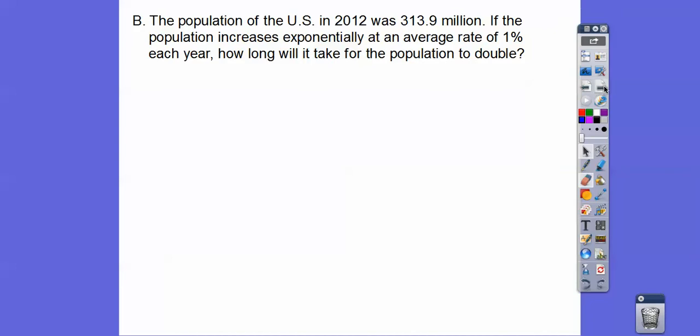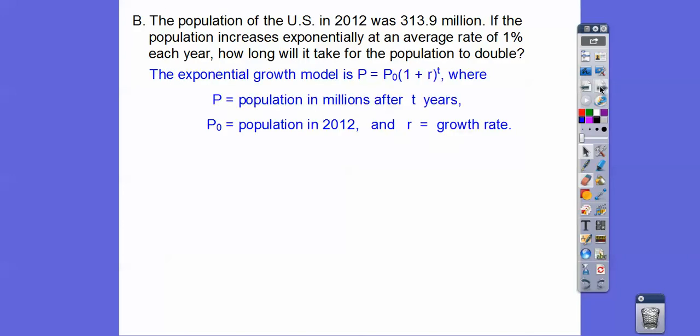Let's try this. The population of the U.S. in 2012 was 313.9 million. If the population increases exponentially at an average rate of 1% each year, how long will it take for the population to double? Our exponential growth model, we've used this before: P equals P sub zero times (1 + r) to the t. This is the beginning, this is the end, this is our rate, and this is our time in years.